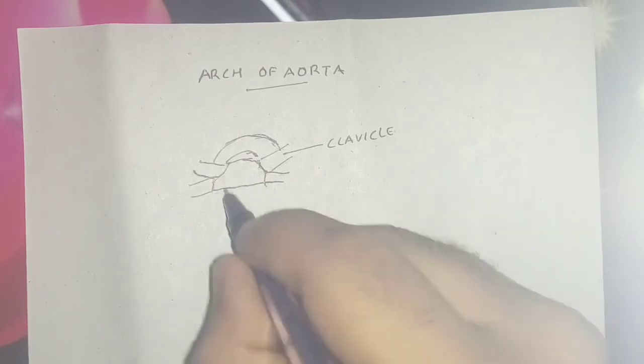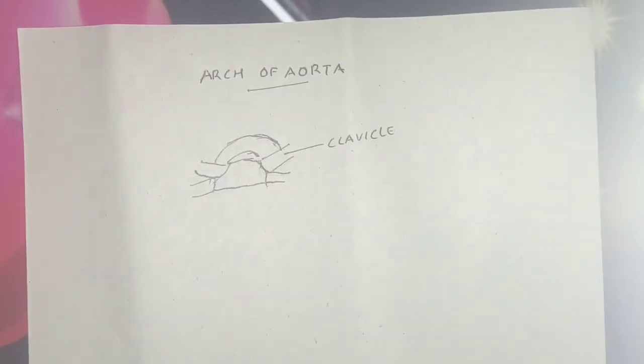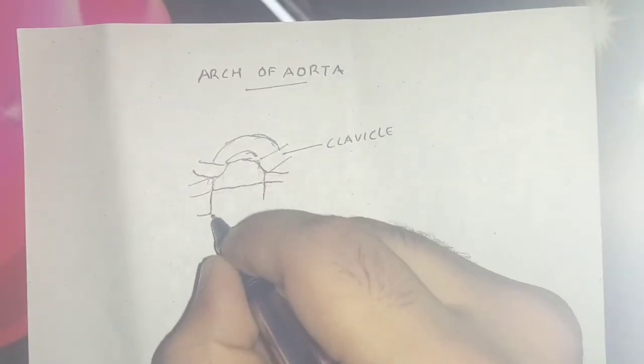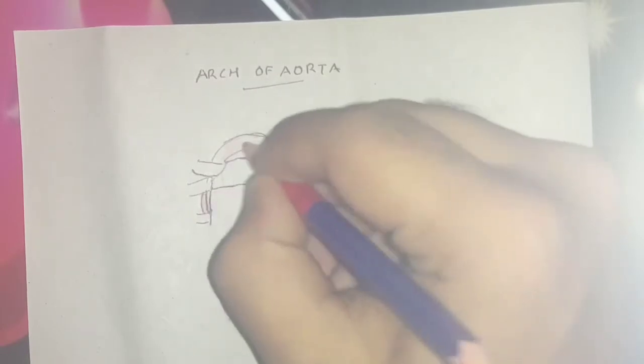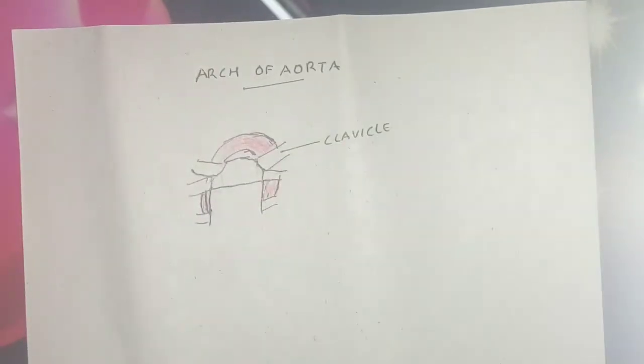It then runs upward, backward, and to the left across the left side of bifurcation of trachea. Then it passes downward behind the left bronchus and on the left side of the body of fourth thoracic vertebra.